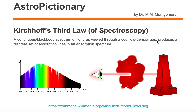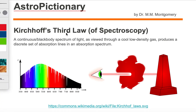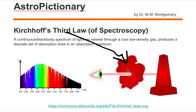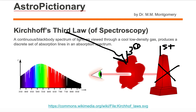Now, it says 'as viewed through a cool low density gas.' So we are looking through this cool low density gas. Kirchhoff's third law is all about this cool low density gas — not the continuous black body spectrum itself. The third law is focused on that cool low density gas, and we're looking through the cool gas at this continuous black body spectrum, which is all the colors of the wavelengths.